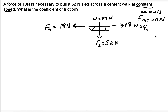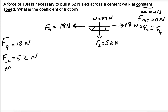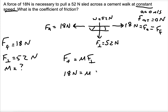So 18 Newtons will be the opposing force. In this case, the only opposing force is friction. So our force of friction is 18 Newtons. Writing down what I know: the force of friction is 18, and the normal force is 52. The equation I gave you says that the force of friction equals mu times the normal force, so this would be 18 equals the coefficient of friction times 52.